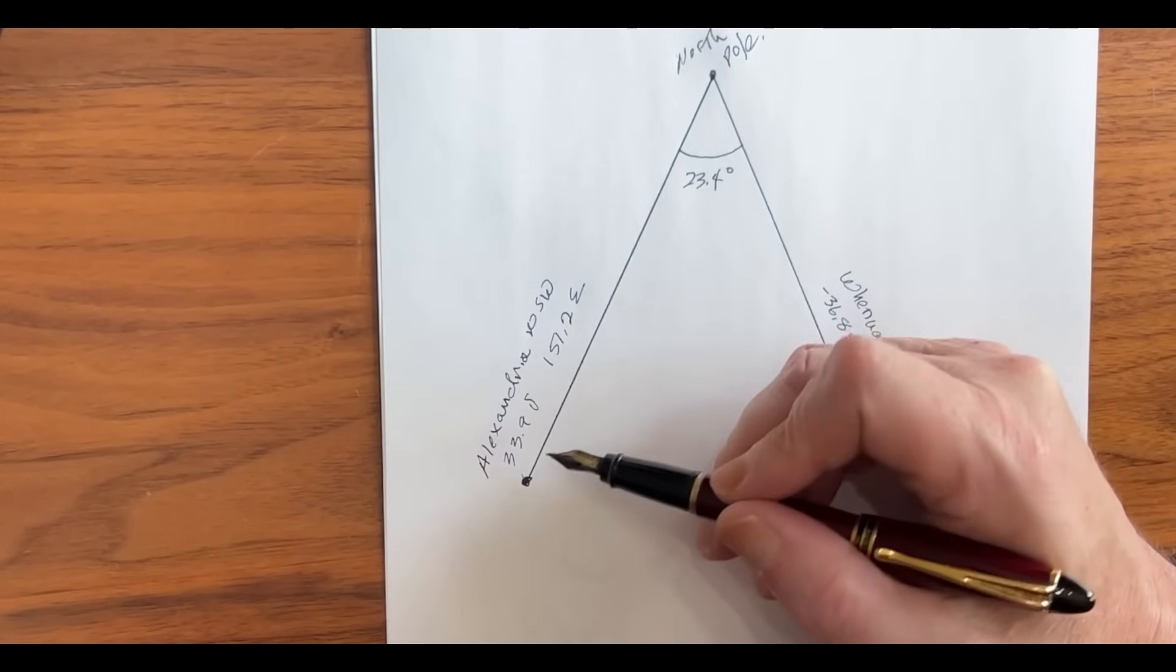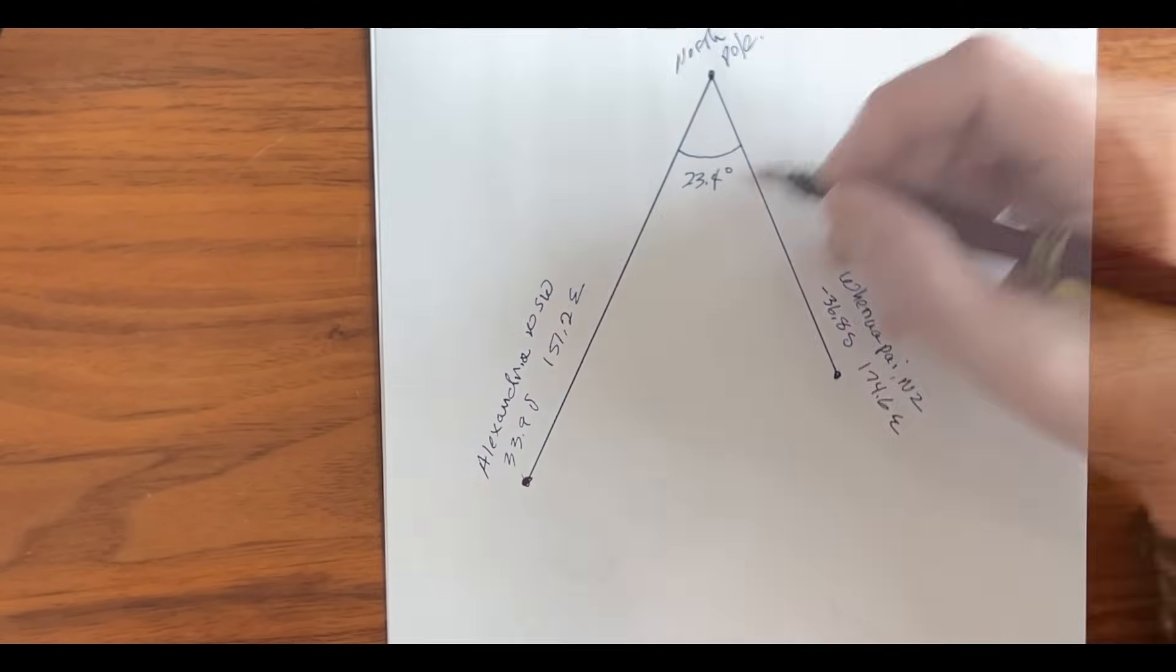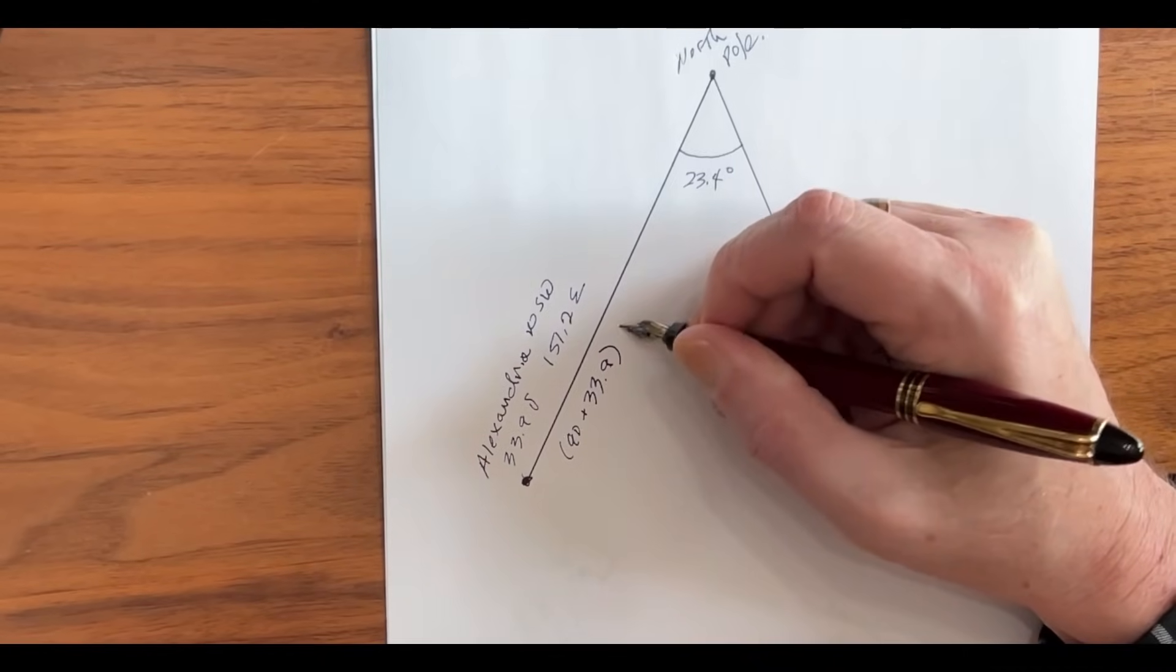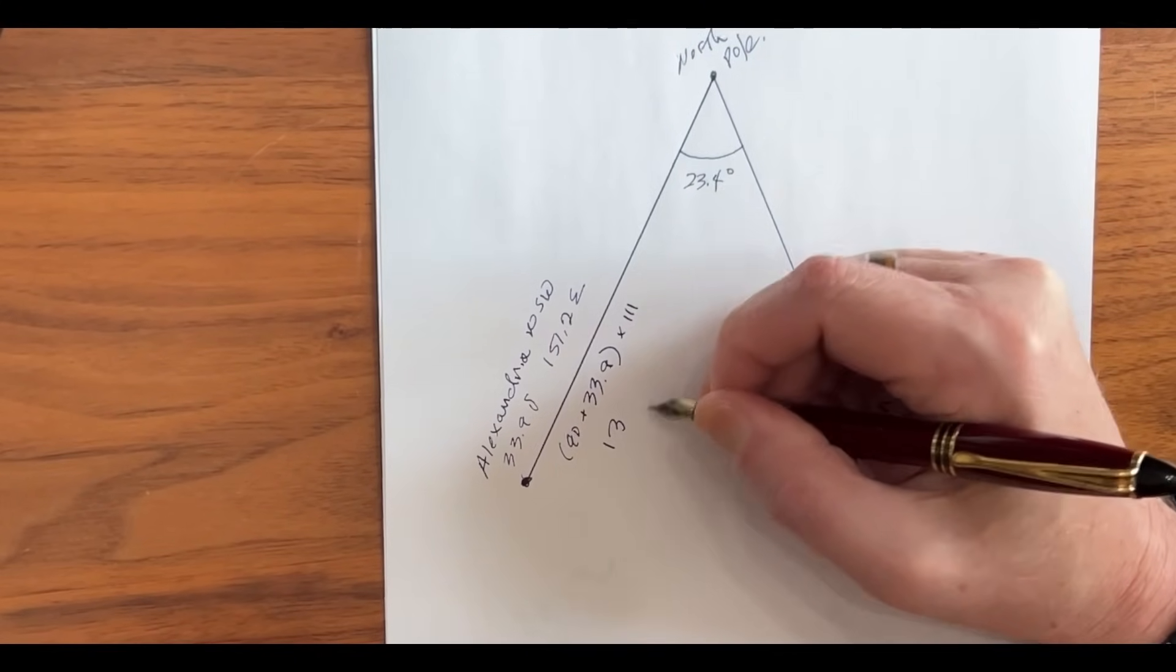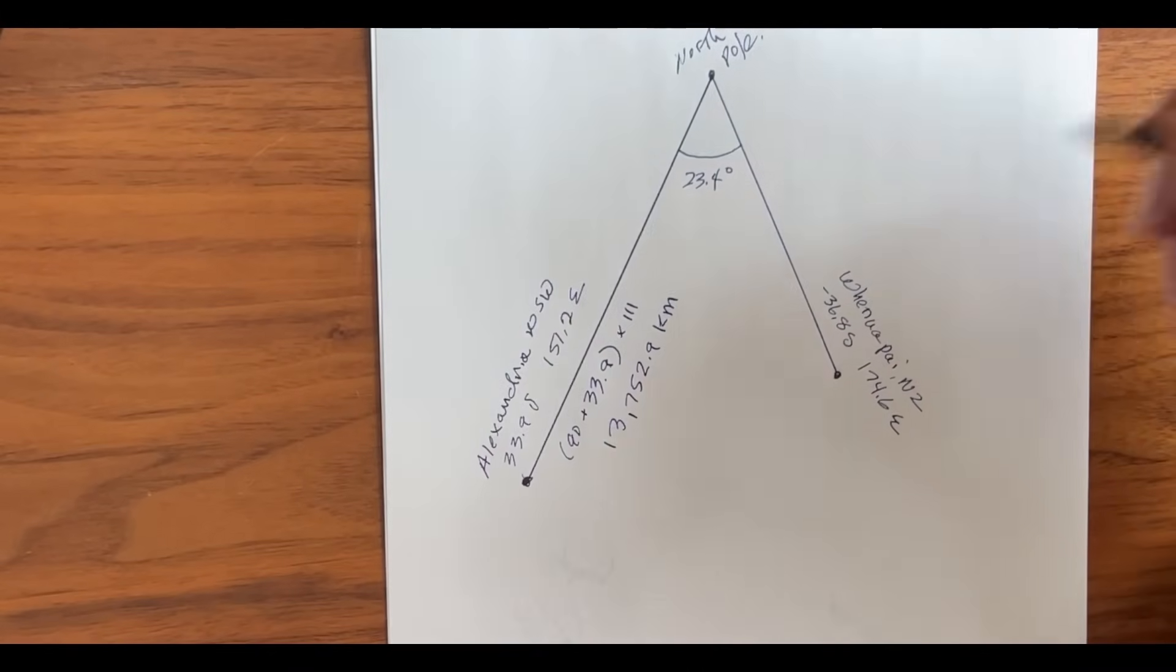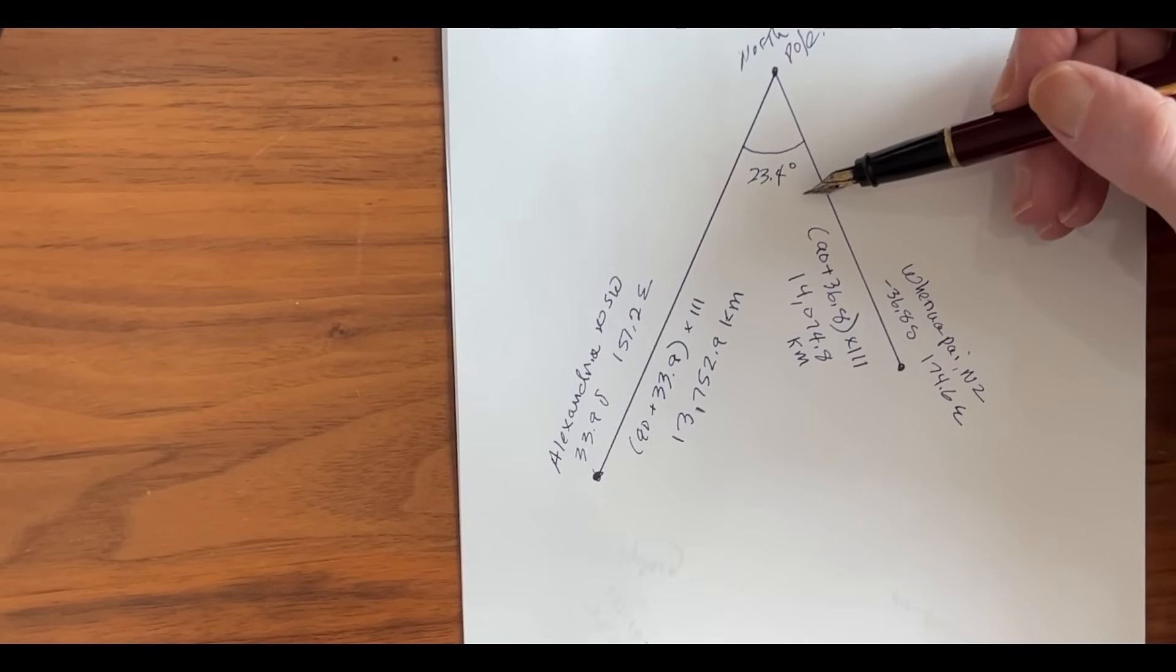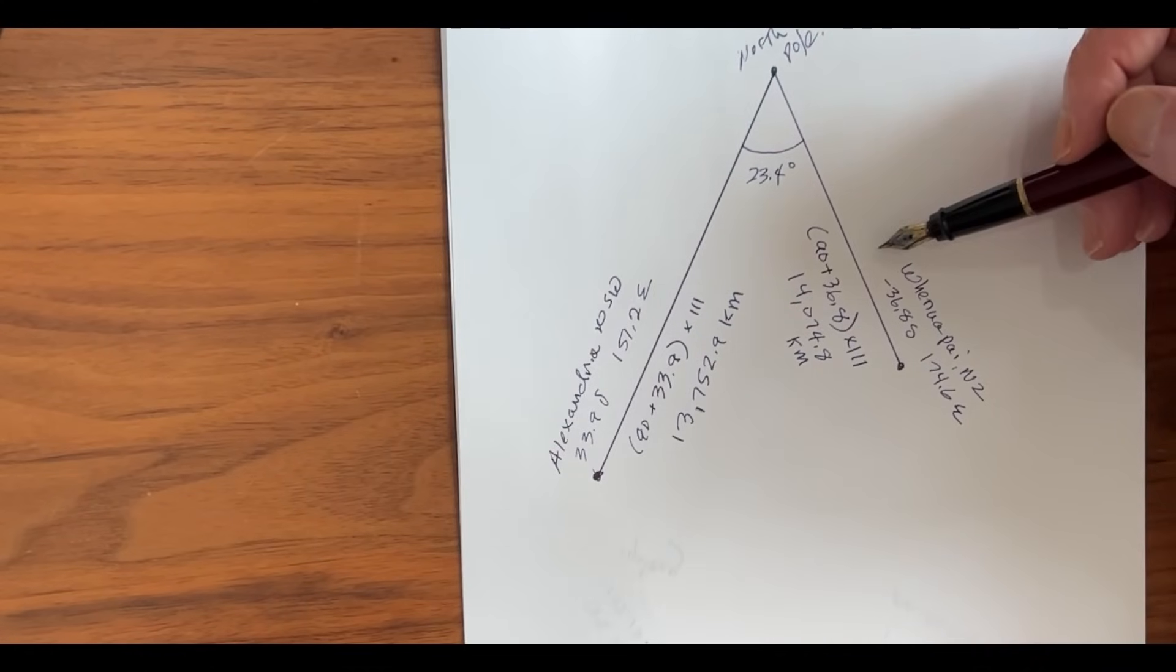The coordinates for Alexandria are 33.9 south, 151.2 east. So to get the distance, it will be 90 to the equator plus 33.9 times 111 kilometers. That distance will be 13,752.9 kilometers. Likewise, we can do the same for Takapuna. The difference in longitude between Alexandria and Takapuna is 23.4 degrees. So we now have a side-angle-side triangle.